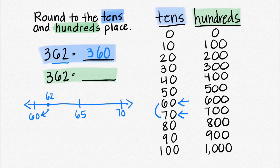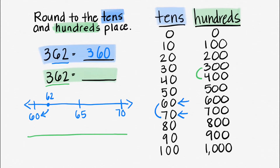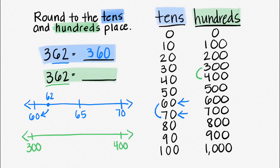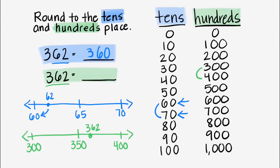Now let's round to the hundreds place. 362 falls somewhere between 300 and 400. We have 300 on one side, 400 on the other, and halfway would be 350. 362 would be after 350. Is 362 closer to 300 or closer to 400? We notice it's closer to 400, so it rounds up to 400.